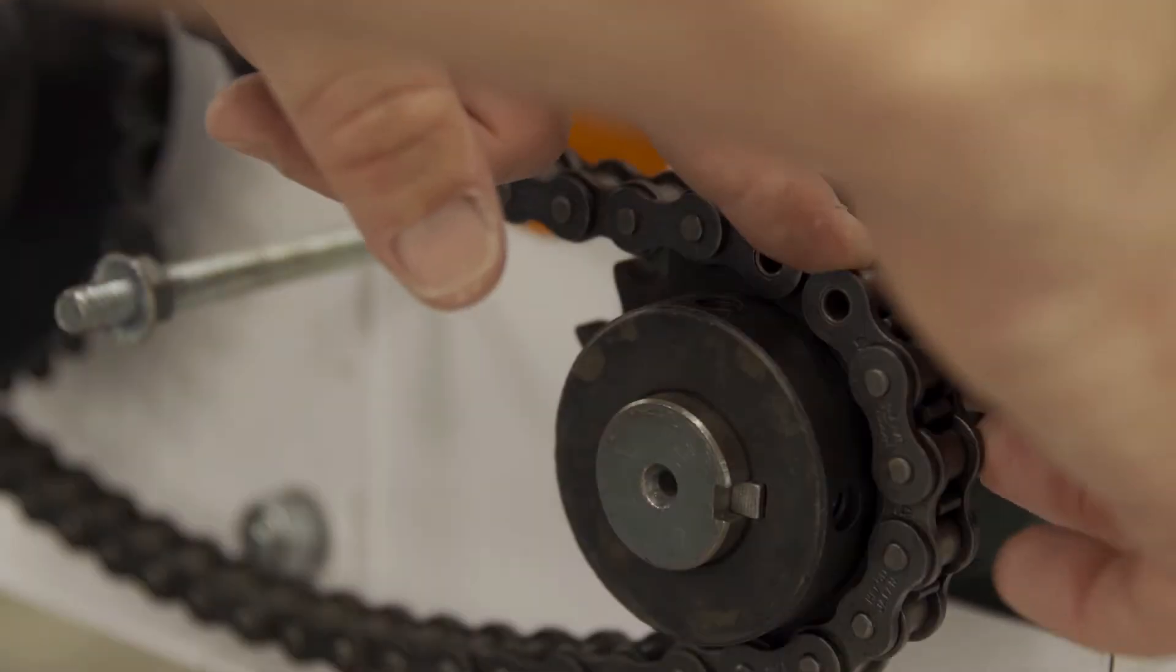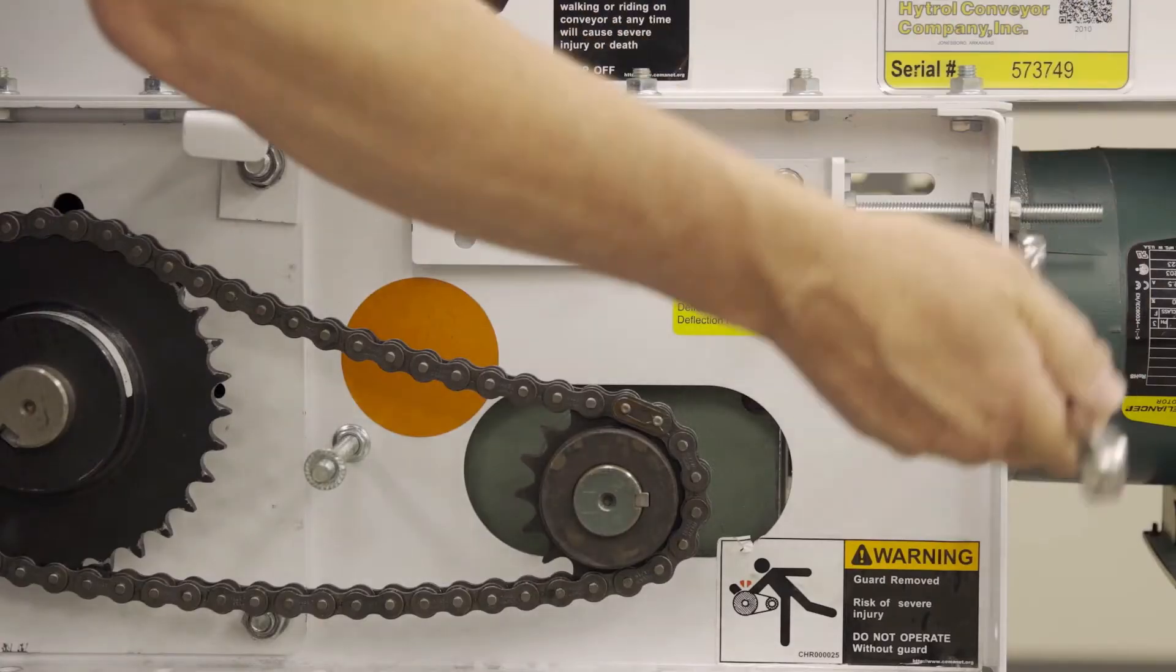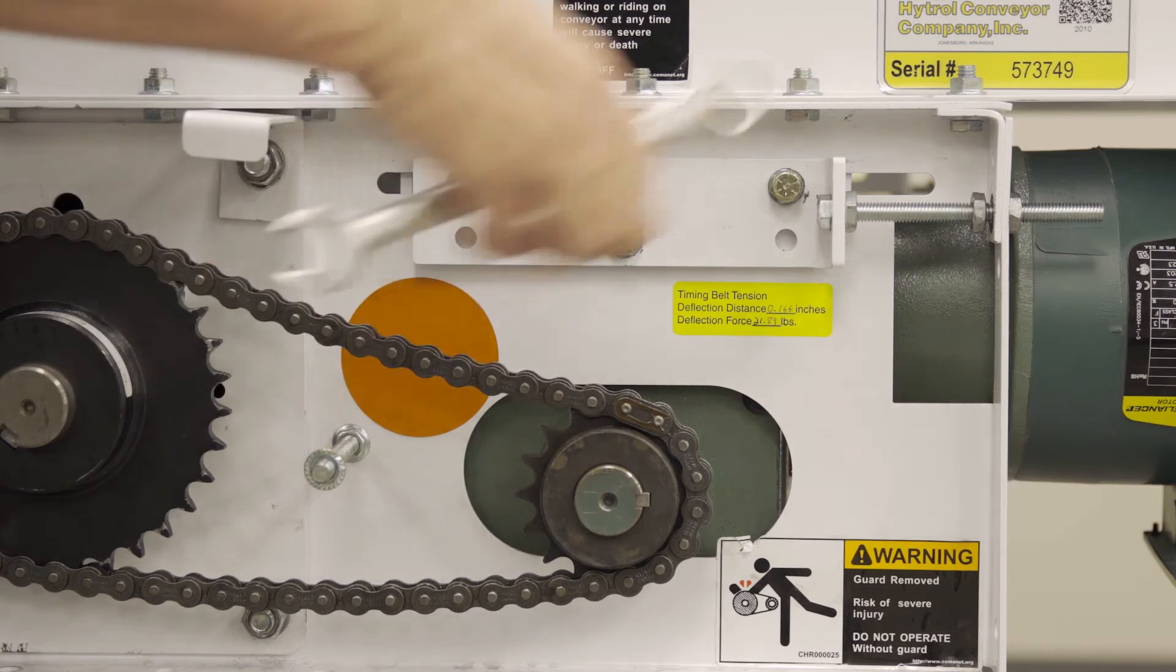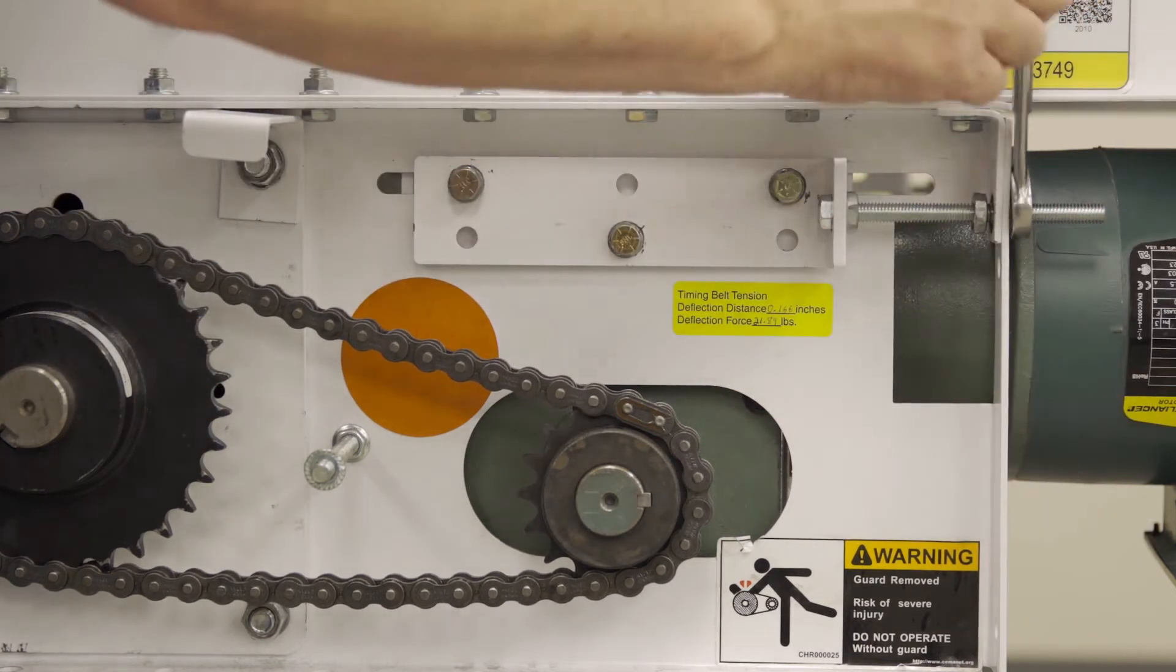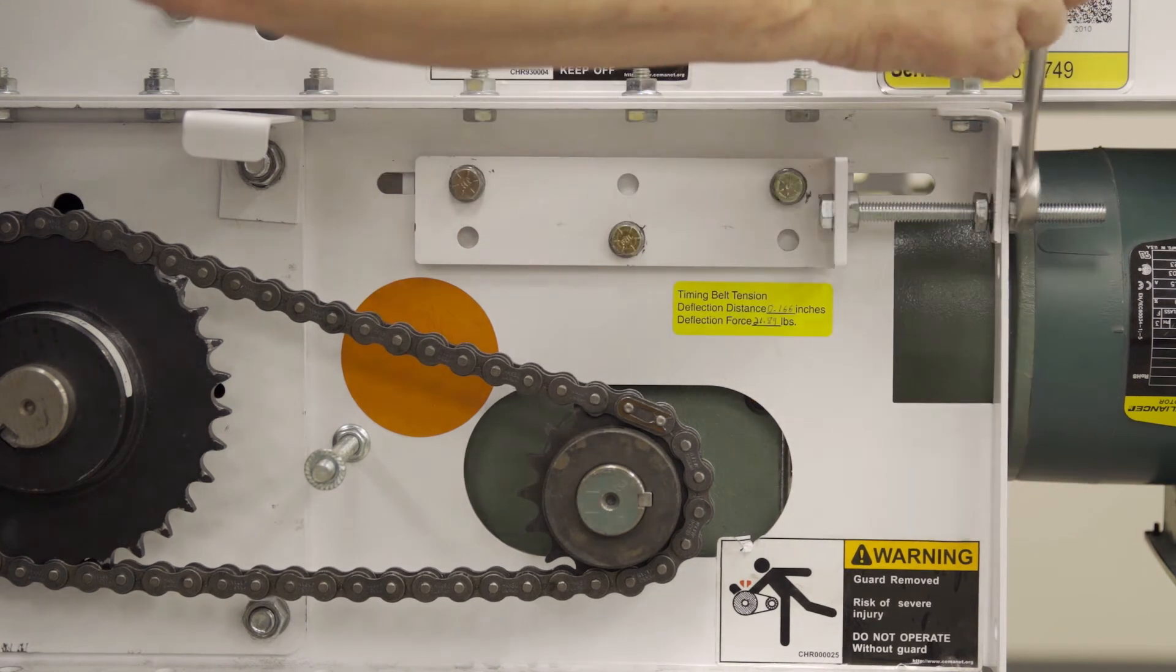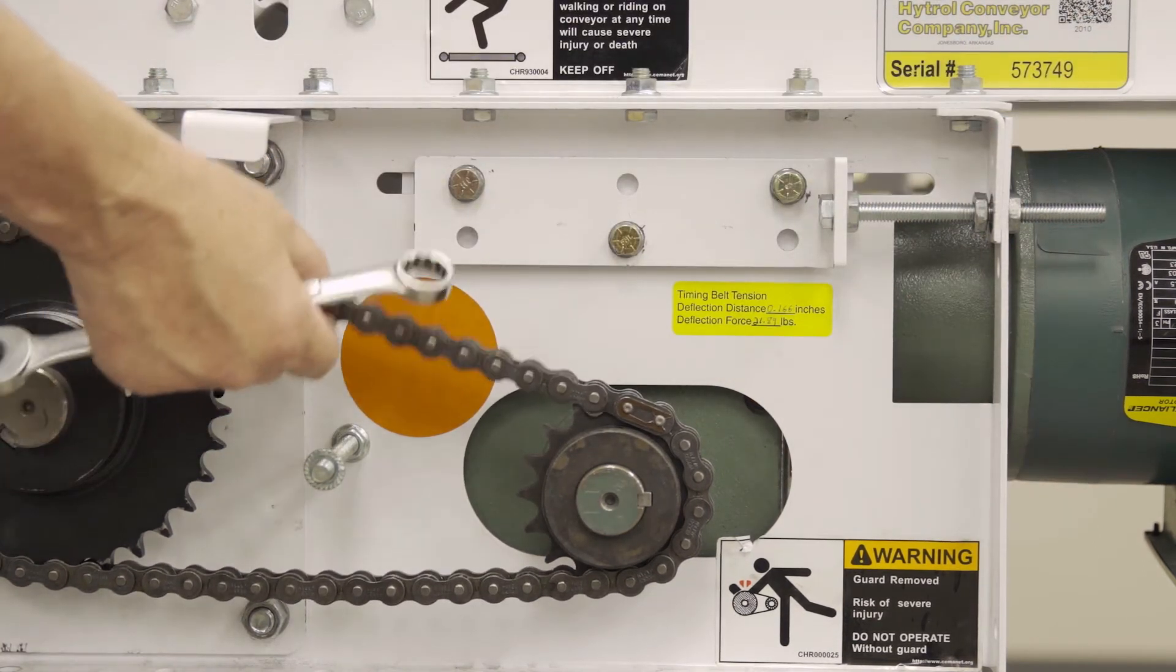Install the new chain and master link. Tension the chain using the two 3 eighths jam nuts on the take-up bolts on the take-up assembly. Make sure your drive chain has proper tension where approximately one quarter inch or two percent of sprocket centers has slack.